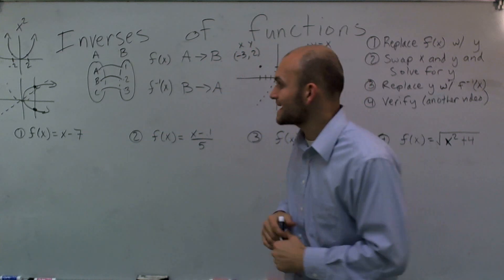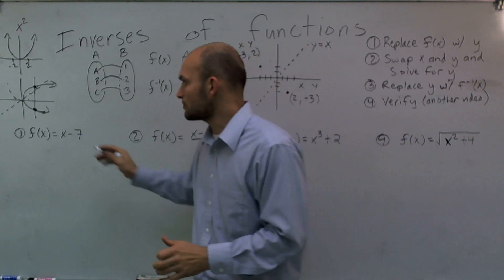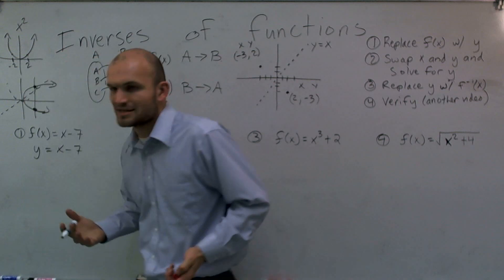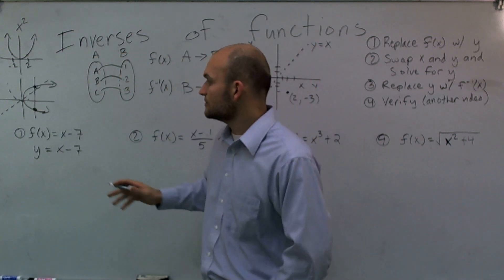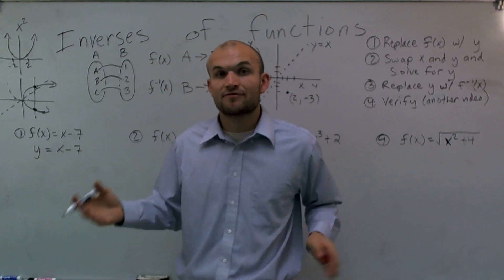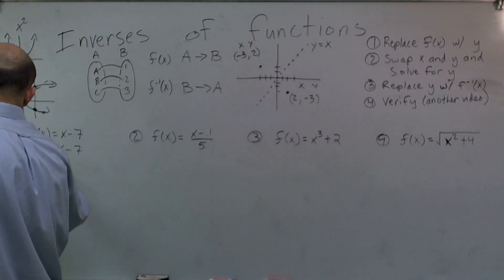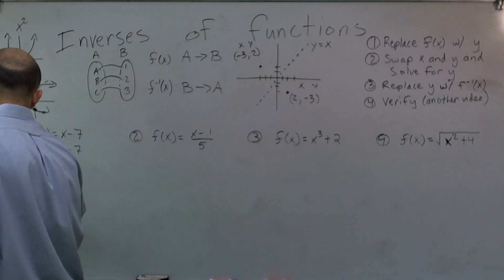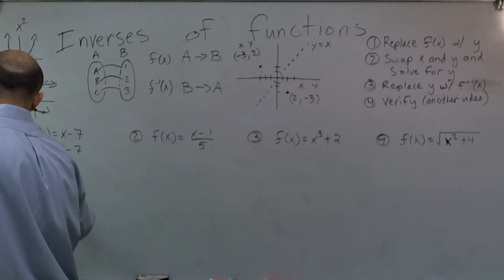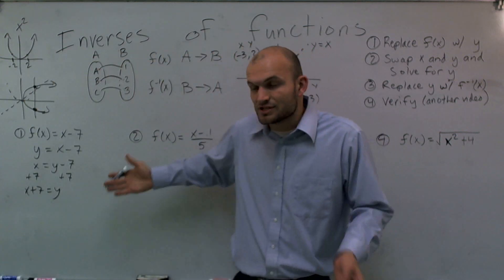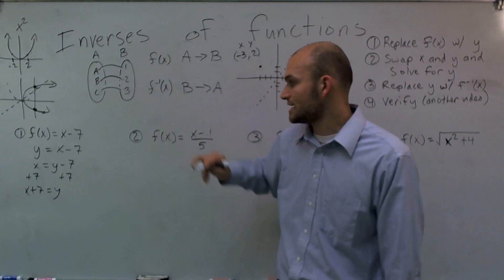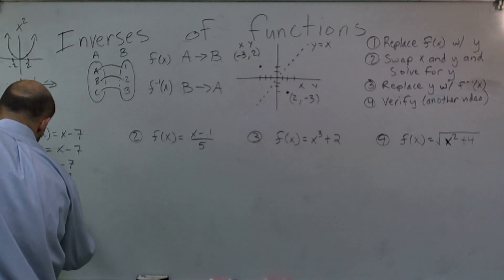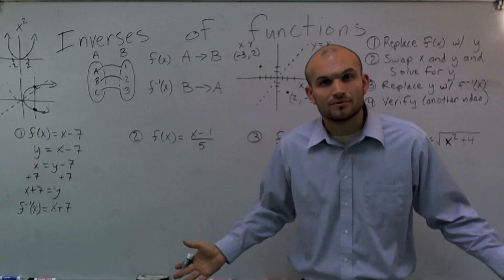Let's look at our first problem: f(x) = x - 7. The first thing you want to do is replace f(x) with y, giving y = x - 7. f(x) and y mean the same thing — they both represent our output values. Now flip x and y, then simply solve for y. Lastly, use correct notation: f inverse of x equals x plus 7.